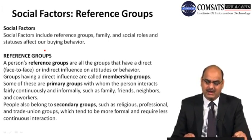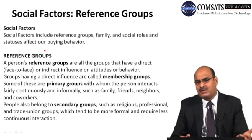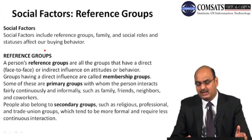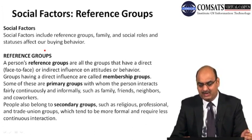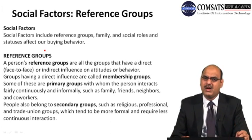Social factors include reference groups, family, and social roles and statuses. Reference groups are all groups that have a direct or indirect influence on attitudes or behavior. Groups with direct influence are called membership groups. Primary groups — those with frequent interaction — include family, friends, neighbors, and co-workers. Family includes parents, brothers, sisters, cousins, uncles, and aunts, whose opinions greatly affect your consumption behavior.